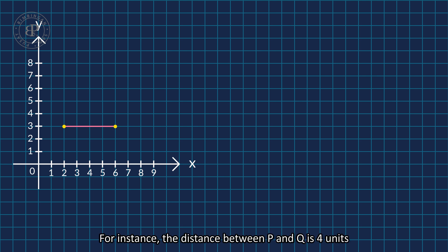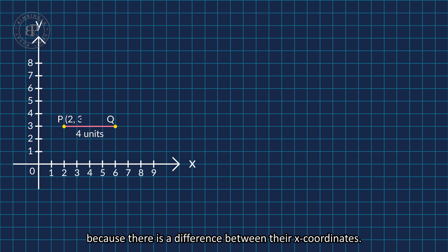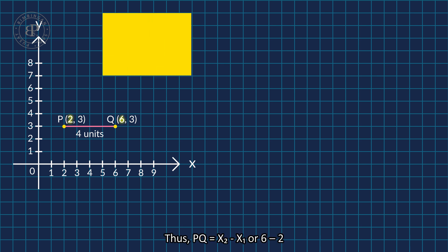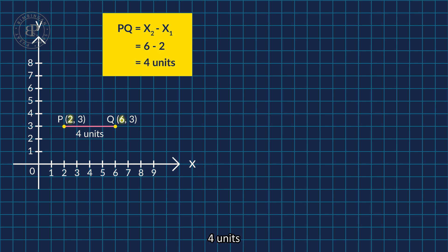For instance, the distance between p and q is 4 units because there is a difference between their x coordinates. Thus, pq equals to x2 minus x1, or 6 minus 2, which equals to 4 units.